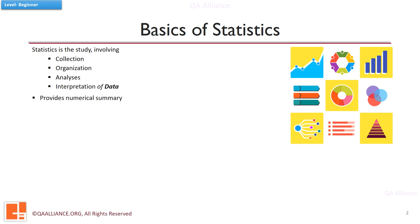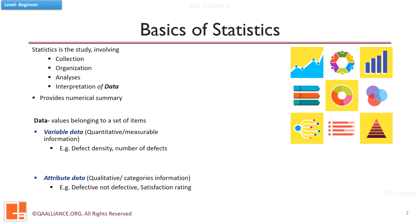Let us see more about the data. Data are values of qualitative or quantitative variables, belonging to a set of items. There are two more terms: variable and attributes. The values of a variable vary and are measurable, while attributes are the characteristics of an object.